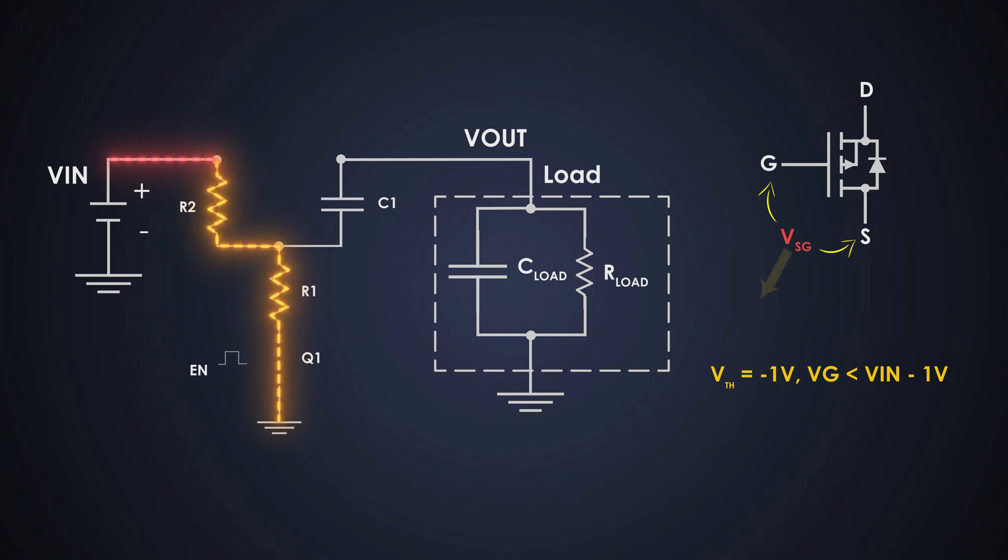Also, we should avoid exceeding VGS MAX, which we will consider as 8V as an example. This will vary as per the MOSFET parameters again. We will use R1 and R2 to ensure the gate voltage is within the safe limits.